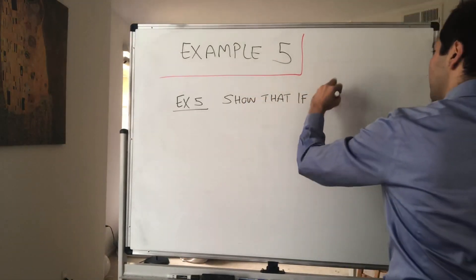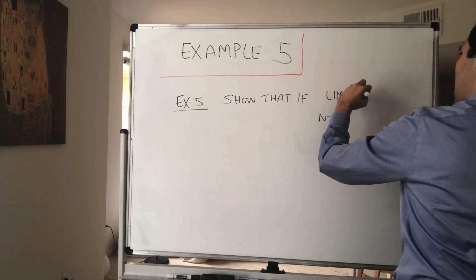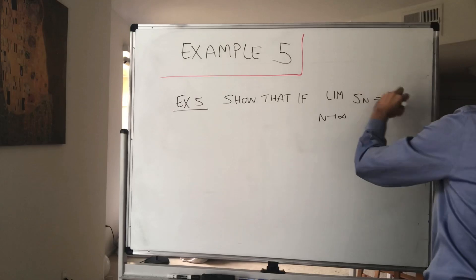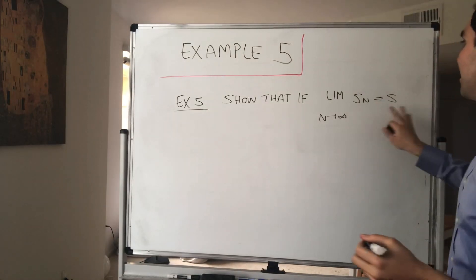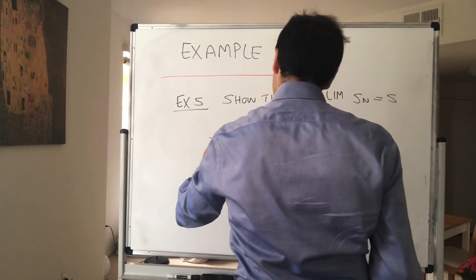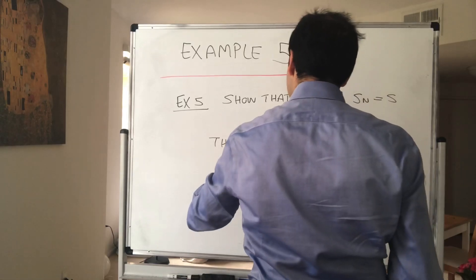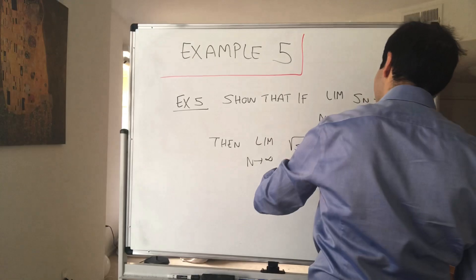Show that if we know that the limit as n goes to infinity of Sn goes to s, so suppose Sn is a non-negative sequence that converges to s, then square root of Sn goes to square root of s.